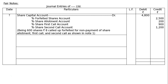To share allotment account: A could not pay — 100 shares × Rs.2 = Rs.200. Share first call account: A 100 shares + B 200 shares = 300 shares × Rs.3 = Rs.900. Second call account: 600 shares × Rs.2 = Rs.1,200. Being 600 shares of Rs.8 called up, forfeited for non-payment of share allotment, first call, and second call as shown in Note 1.